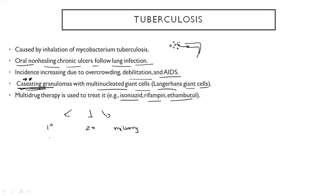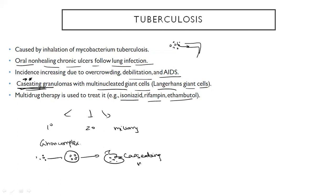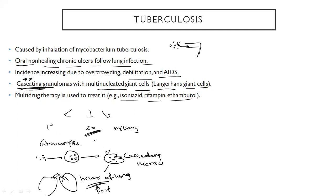In primary tuberculosis, also known as the Ghon complex, the inhaled bacteria gets surrounded in a granuloma. This undergoes caseating necrosis, and the infection reaches the hilar lymph node of the lung. In secondary tuberculosis, the infection spreads and is a more widespread disease with cavitation. Miliary tuberculosis means there is systemic spread of the disease.